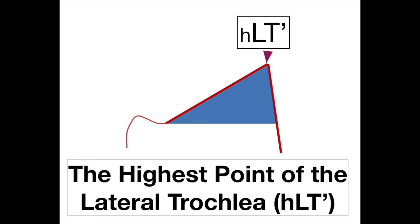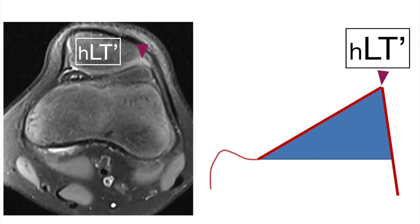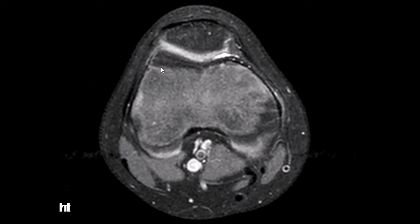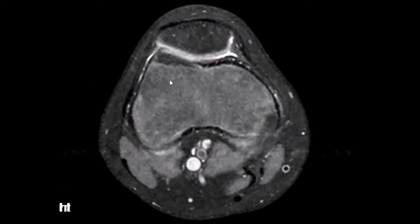The highest point of the lateral trochlea is the highest point of the lateral trochlear facet. In the normally developed trochlea, this point corresponds to the most lateral aspect of the trochlea. In this example of a normal trochlea, we can appreciate how the highest point of the trochlea is localized on the most lateral aspect of the trochlea, and that this is also the case in the more proximal axial cuts.